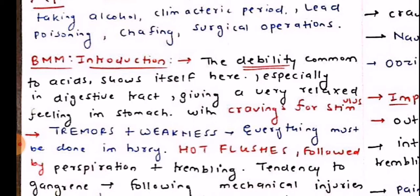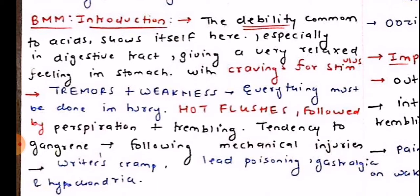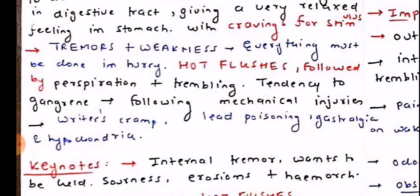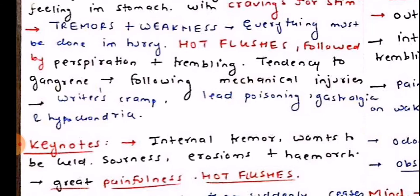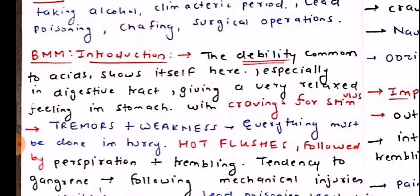From Boericke's Materia Medica: the debility which is common to acids shows itself here, especially in the digestive tract, giving a very relaxed feeling in the stomach with cravings for stimulants. There are tremors plus weakness, everything must be done in a hurry, hot flushes followed by perspiration and trembling, tendency to gangrene following mechanical injuries, writer's cramp, lead poisoning, gastralgia and hypochondria. Gastralgia and hypochondria are very important symptoms of Sulphuric acid.